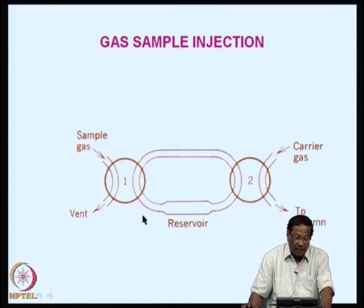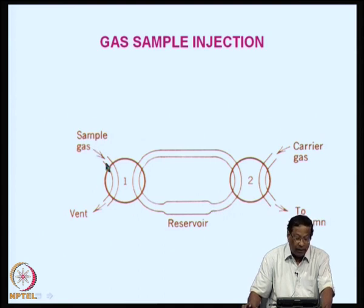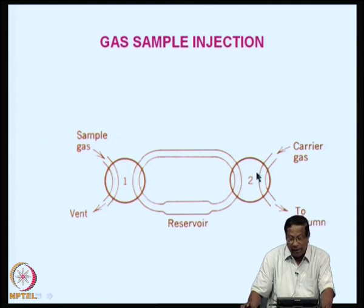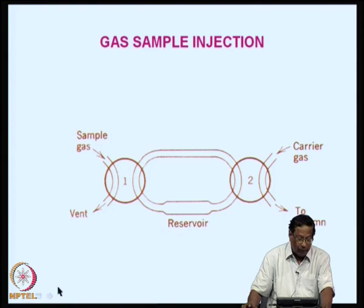For gas sample injection through a valve and loop arrangement, the sample gas comes in and is collected in a loop. The carrier gas is also passing through. Whenever gas is collected here, the carrier gas takes it as a plug and carries it directly through the loop system into the column.